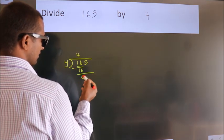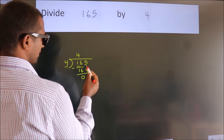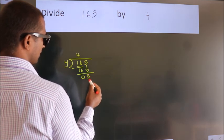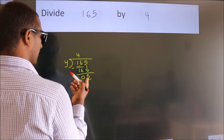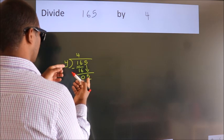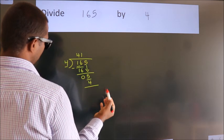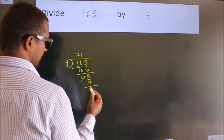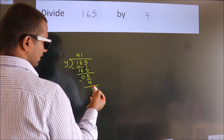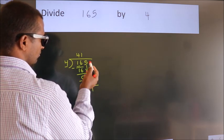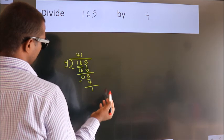After this, bring down the next number, so 5. A number close to 5 in the 4 table is 4 times 1 is 4. Now we subtract, we get 1. After this, no more numbers to bring down, so